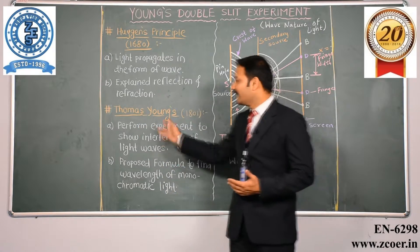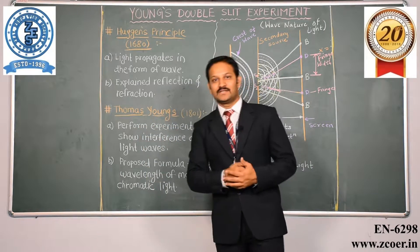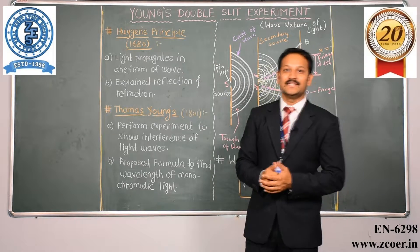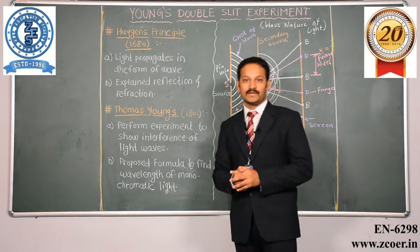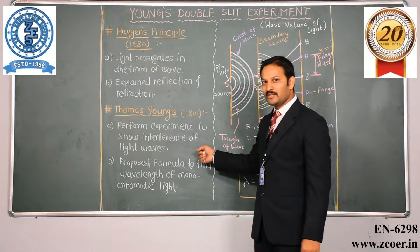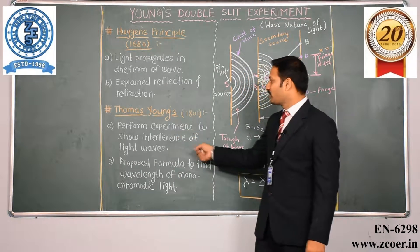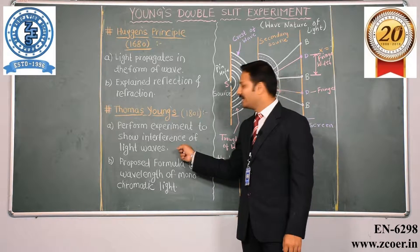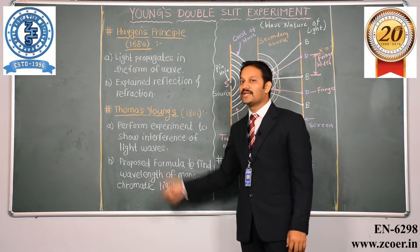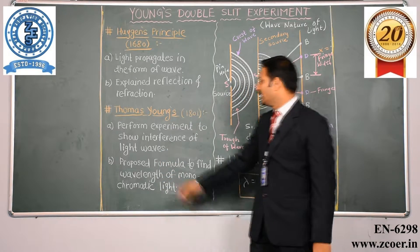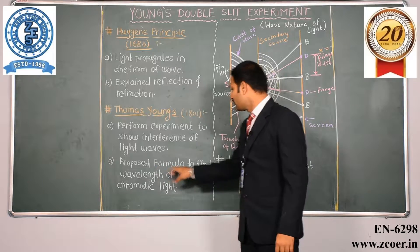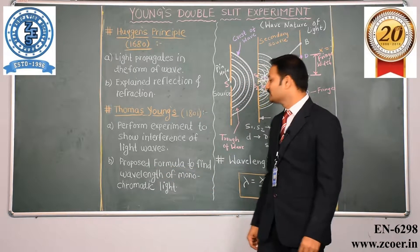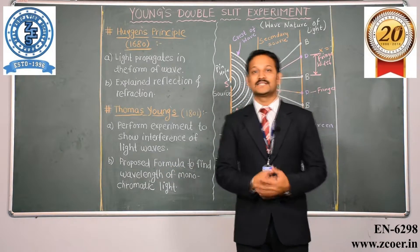Then came an English physicist named Thomas Young in 1801. He did lots of experiments to show the interference of light waves. Secondly, he proposed a formula to find out the wavelength of monochromatic light.